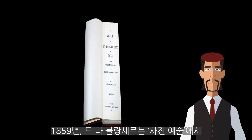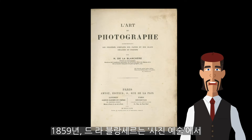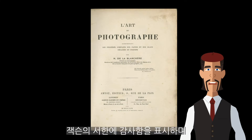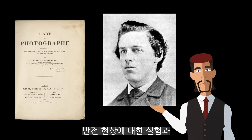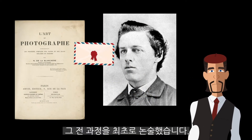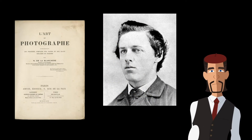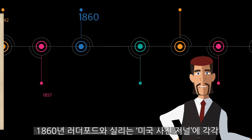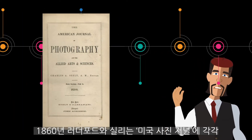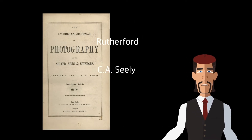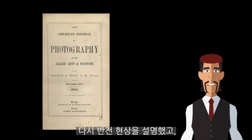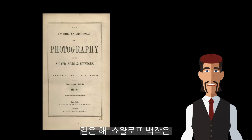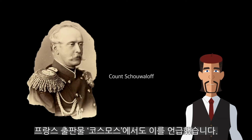In his 1859 work L'Arc du Photographe, H. de la Blancher became the first person to discuss the process in a full-length work, appreciating Jackson's letter and noting that he had replicated the experiment. It was described again in 1860 by Rutherford and C. A. Sealy separately, in successive issues of the American Journal of Photography, and in the same year by Count Schooloff in the French publication Cosmos.